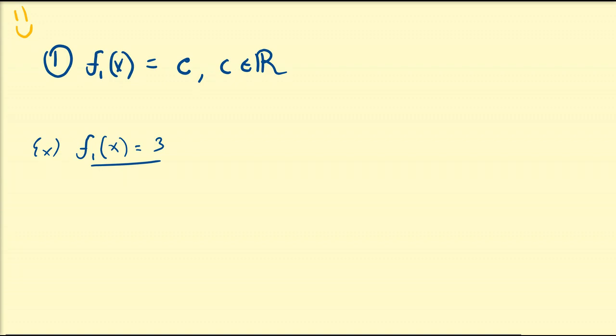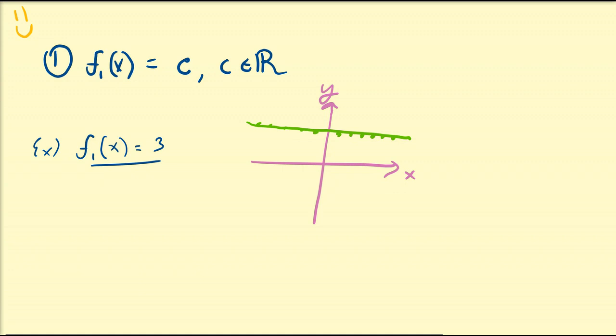When x is equal to 1, y is equal to 3. When x is equal to 2, y is equal to 3. When x is equal to any number you could possibly say, y is equal to 3. So if that is the case, what does the graph of this relation look like? We let this be the x-axis and this the y-axis. We start plugging in a bunch of numbers for x and we get the same y value of 3.